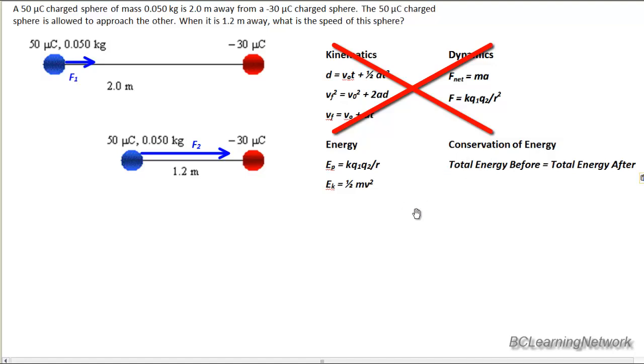It's just naturally moving from left to right due to the energy provided by the opposite charges. So we can use conservation of energy, and all we need to do for conservation of energy is just keep track of what types of energy we started with and what types of energy we end with.